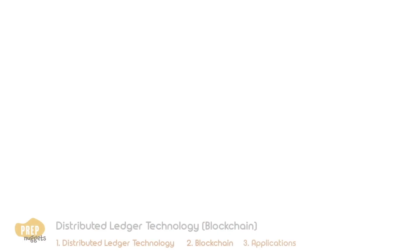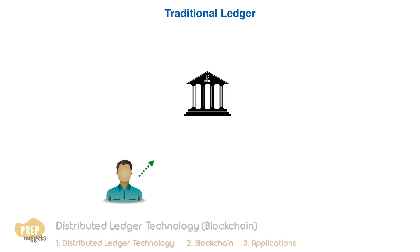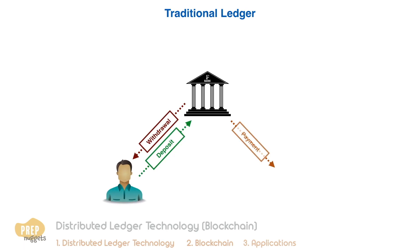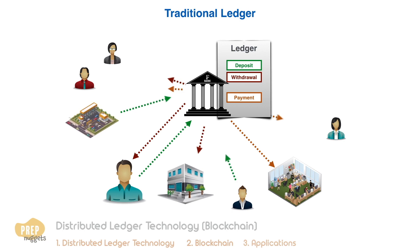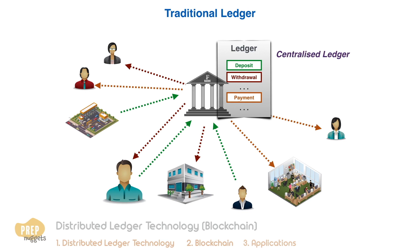Let's first examine how ledgers work traditionally. You probably have transactions with a bank — either deposits, withdrawals, or paying a third party. All these transactions are recorded in the bank's ledger, which also records transactions that all parties have with the bank.